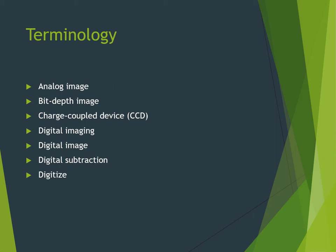A charge coupled device or CCD is a solid-state silicon chip detector that converts light or x-ray photons into electrical charge or signal — in digital imaging a CCD is found in the sensor. Digital imaging is a filmless imaging system: a method of capturing an image using a sensor, breaking it into electronic pieces, and presenting and storing the image using a computer and software. A digital image is an image composed of pixels that can be stored in a computer.